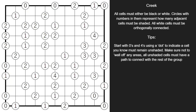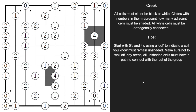So without further ado, let's get to solving. I'm going to start where there's any zeros or fours because those are obviously going to be the easiest. Anytime you see a zero, you know all of the adjacent cells are going to be unshaded. I'm going to use a dot as a marker so that I know these are unshaded cells. So wherever there's a zero, you can put dots next to them. For the fours, you know all of the cells next to the four are going to be shaded in.